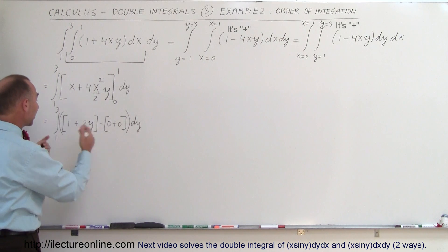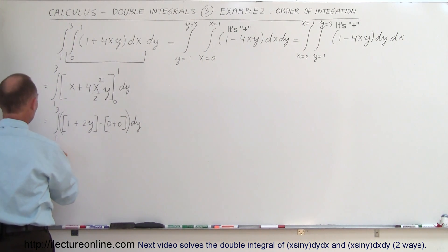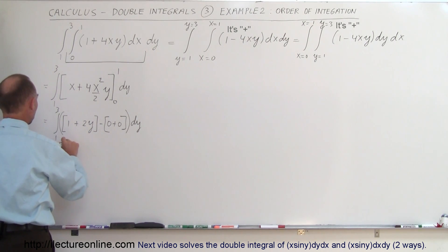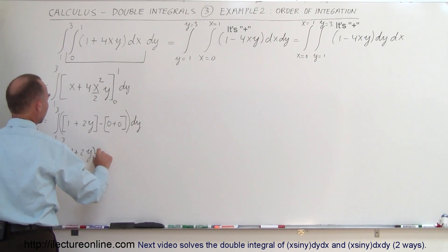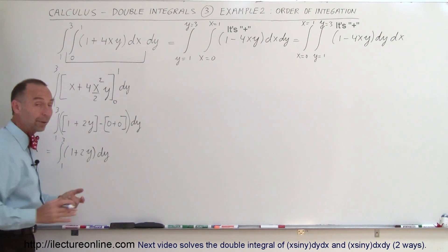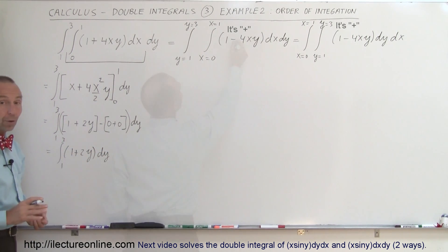This simplifies to the integral from 1 to 3 of 1 plus 2y dy.